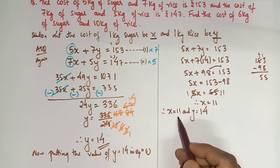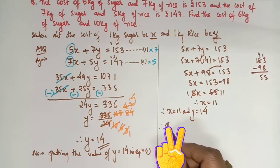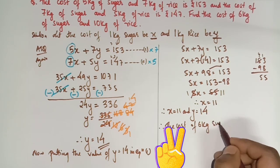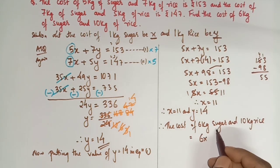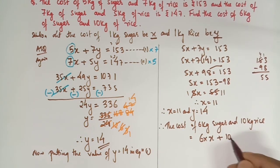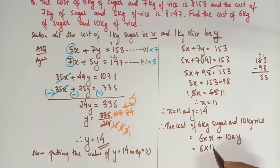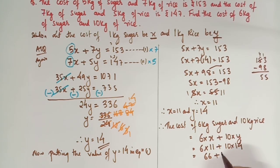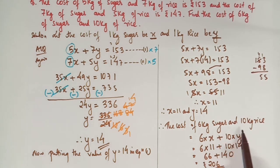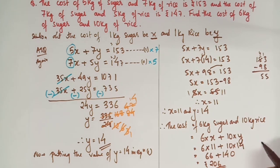That means the cost of 6 kg sugar and 10 kg rice is 206 rupees. This is your final answer, and this question carries 4 marks.